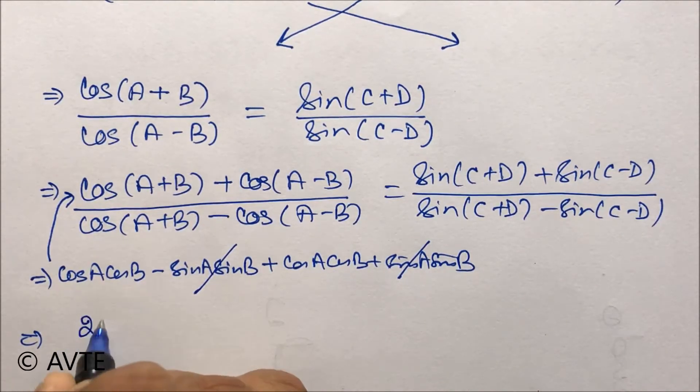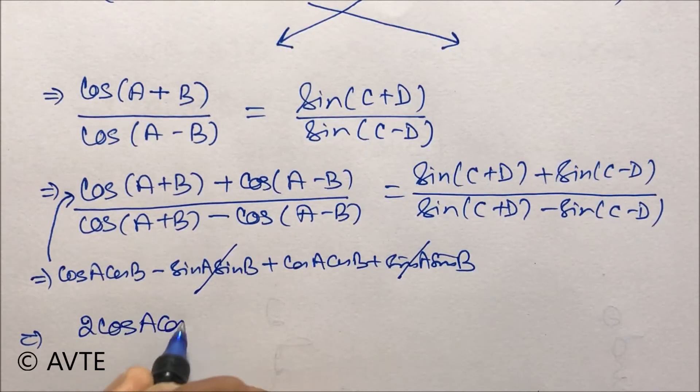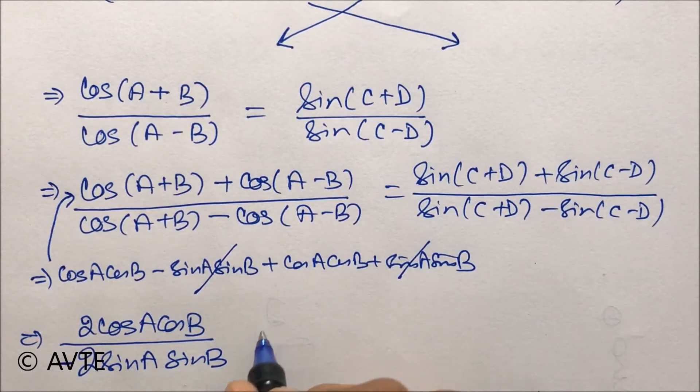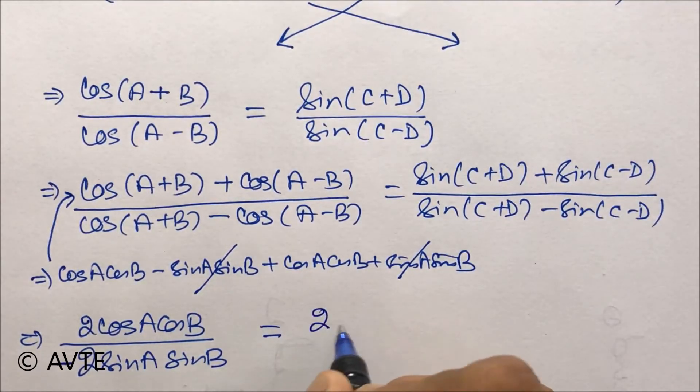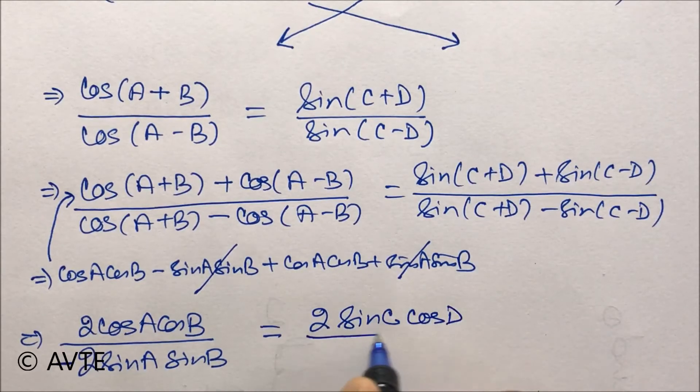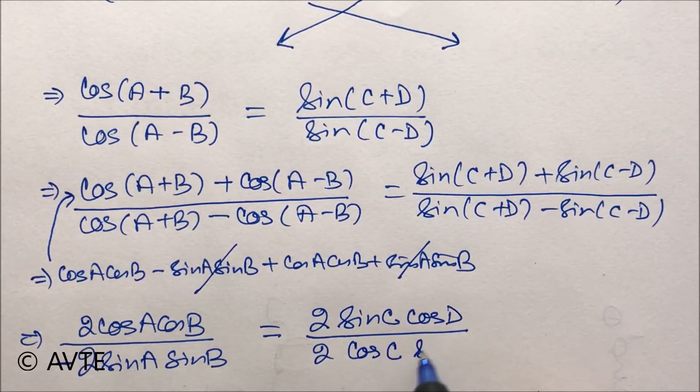So let me write 2 cos A cos B for the numerator, 2 sin A sin B for the denominator with negative sign. The other side is 2 sin C cos D, and the denominator turns to 2 cos C sin D.